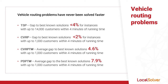On the capacitated vehicle routing problem with time windows, the average gap to the best-known solution is 4.6% on instances with up to 1,000 customers within 4 minutes of running time. On the pickup and delivery problem with time windows, the average gap to the best-known solution is 7.9% on instances with up to 1,000 customers within 4 minutes of running time.